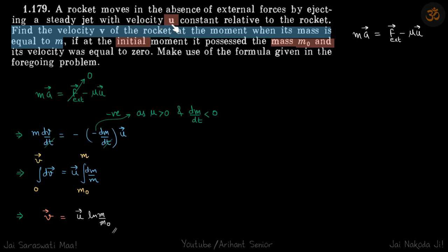Here we have a rocket which is ejecting gas at a constant velocity u with respect to the rocket. We need to find the velocity of the rocket when its mass is equal to m, if the initial mass is m naught and initial velocity is zero, using the formula given in the foregoing problem.